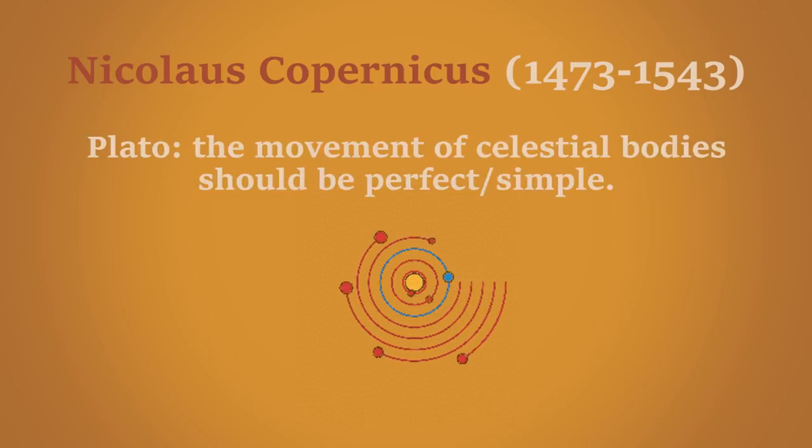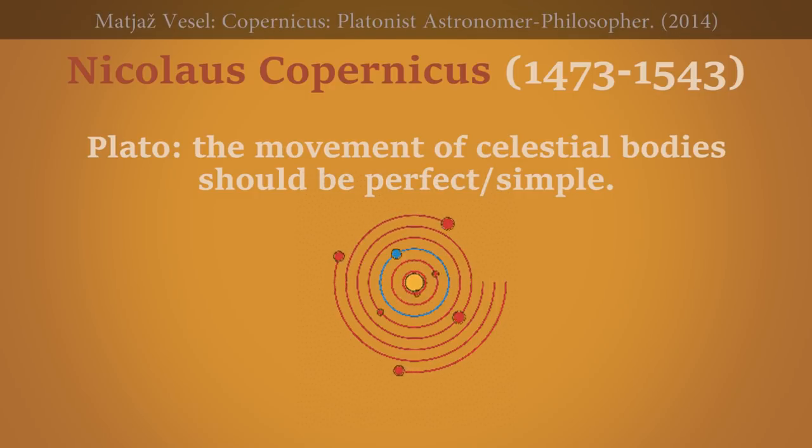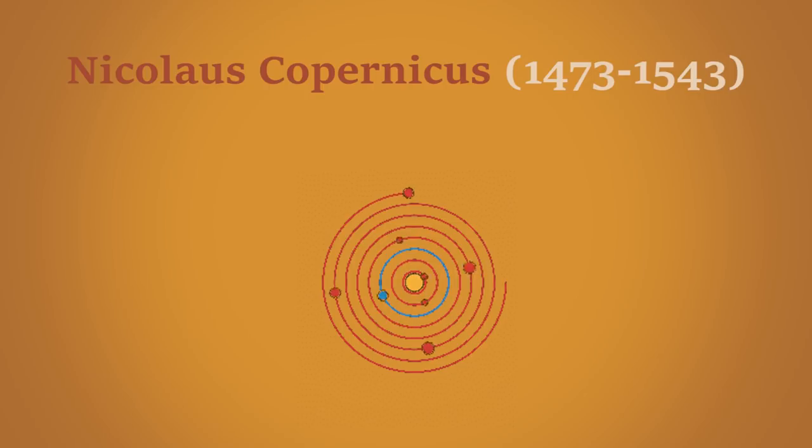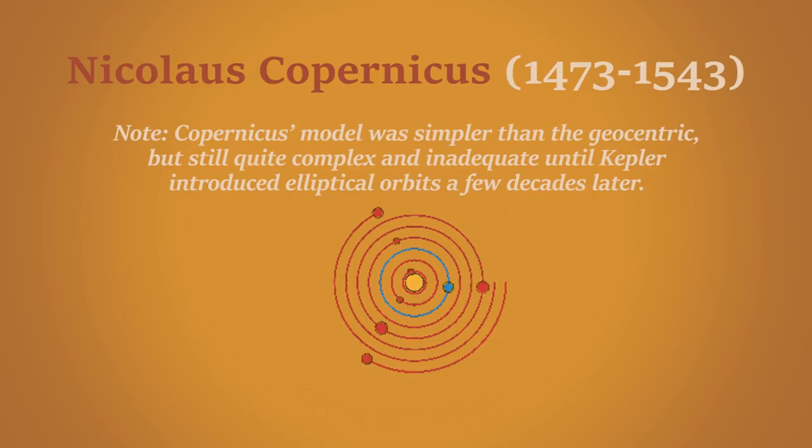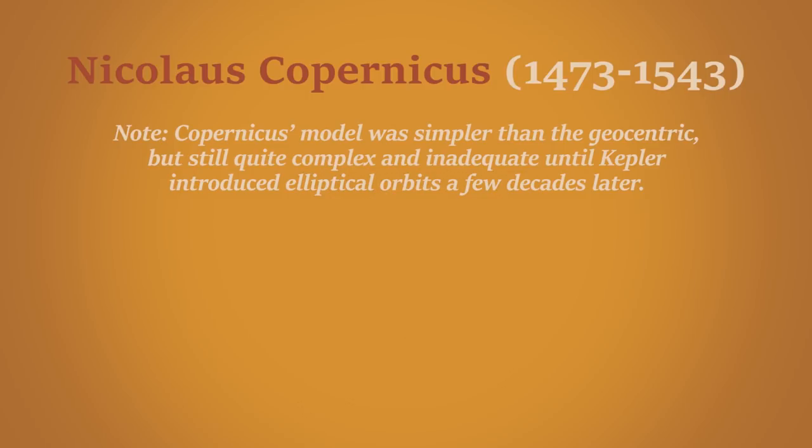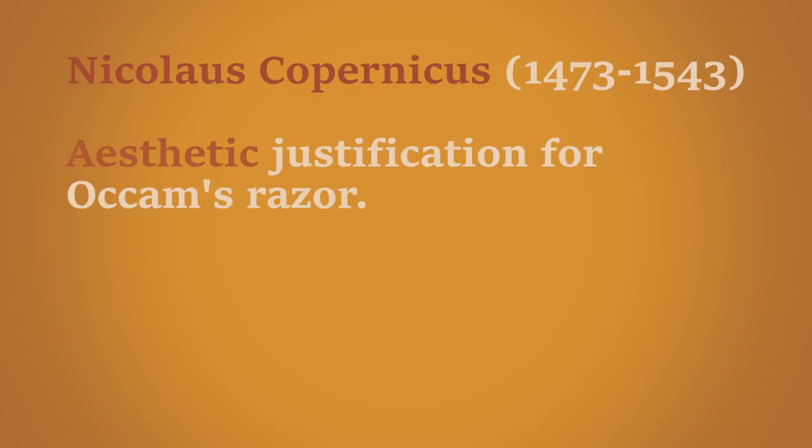Copernicus adopted Plato's conception of celestial bodies as being perfect, and thereby they would have to display a perfect and simple kind of motion, one that is not to be found in the somehow chaotic Ptolemaic geocentric model. One could therefore say that one of his reasons for developing an alternative model of the solar system was aesthetic, although it was by no means his only reason.